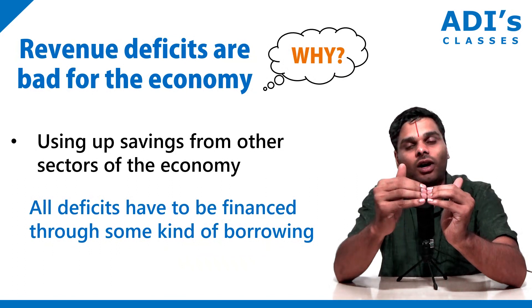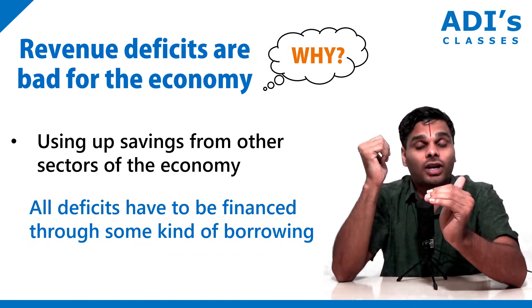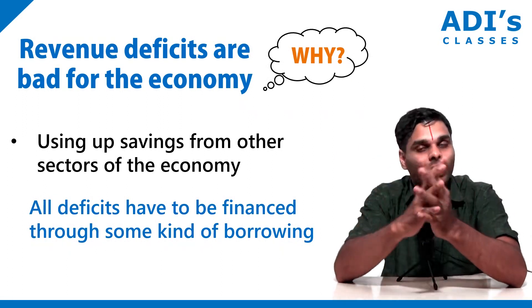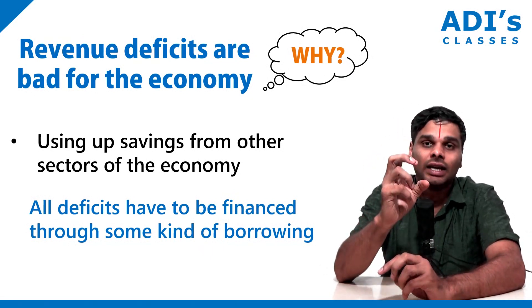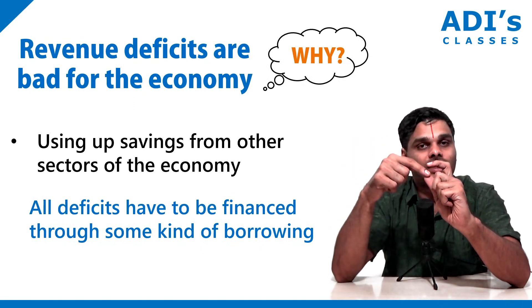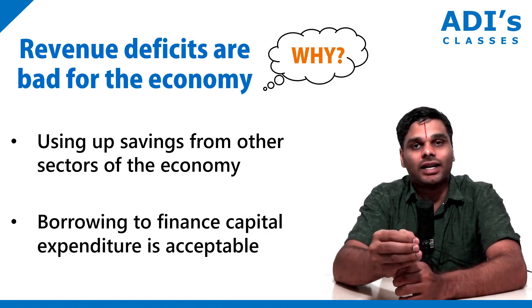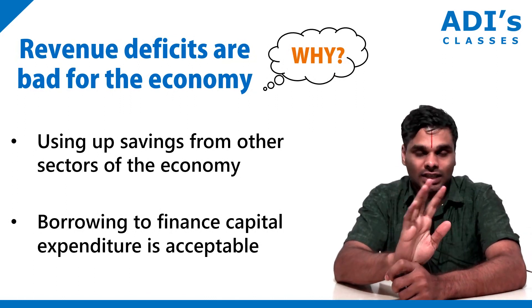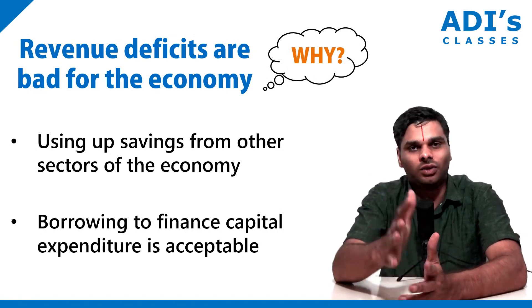If there is a lot of revenue deficit, this deficit has to be adjusted from somewhere. Then the money that had to be spent on capital expenditure — creating roads, big buildings, IT tech parks — that money gets redirected to revenue expenditure, and this starts affecting the growth of the country. If one sector is creating a deficit, some other sector of the economy has to come and service this deficit. Borrowing money to finance capital expenditure is acceptable; however, borrowing it to finance consumption or revenue expenditure is not fiscally responsible.